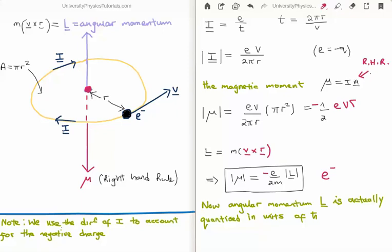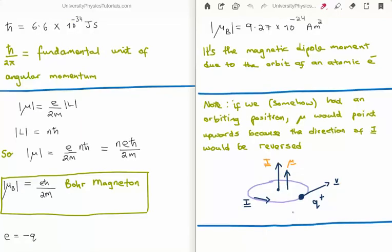Now we know of course from a bit of quantum mechanics that the angular momentum L is actually quantized in units of h bar, which is Planck's constant h divided by 2π. So h bar is 6.6 times 10 to the minus 34 joule seconds. And it is the fundamental unit of angular momentum. So that means that if you have one unit of angular momentum then you have h bar units, and if you have two units then you have twice h bar and so on.